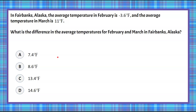Welcome back! Let's review the information provided to us. In February, the average temperature is negative 3.6 degrees Fahrenheit, and in March it is 11 degrees Fahrenheit. We want to find the difference between these two average temperatures.